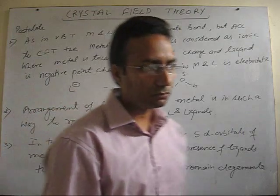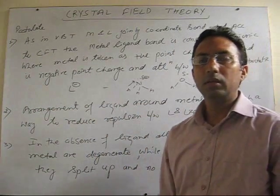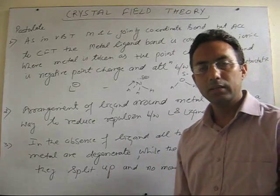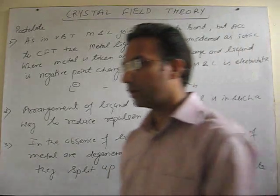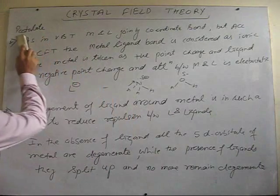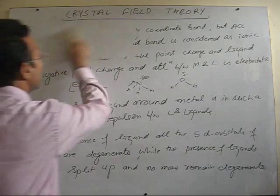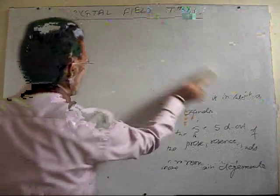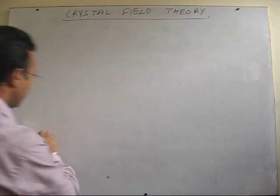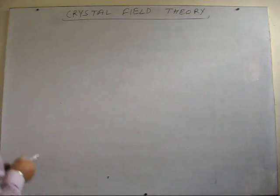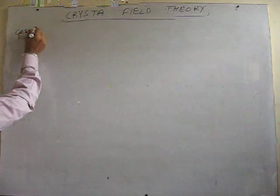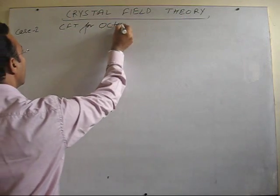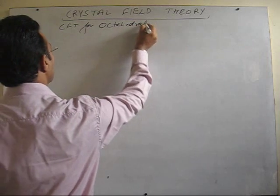We will see how this splitting takes place in different cases. In crystal field theory at the plus-2 level, we will talk about two cases: octahedral complexes and tetrahedral complexes, that is coordination number 6 and coordination number 4. Let's explain the first case — CFT for octahedral complexes.